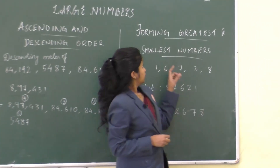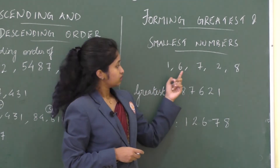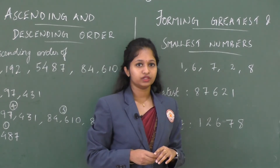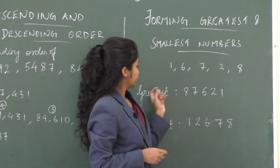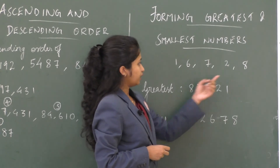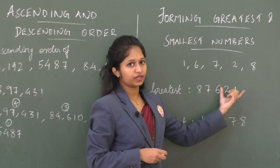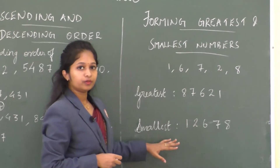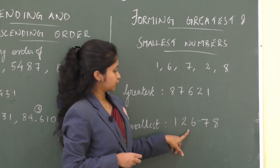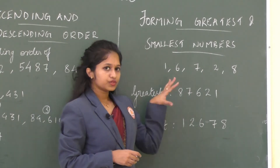Now we will learn how to form the greatest and smallest numbers using given digits. Here I have the digits: 1, 6, 7, 2, and 8. To form the greatest number, write the digits in descending order: 8, 7, 6, 2, 1 — giving 87,621. To form the smallest number, write the digits in ascending order: 1, 2, 6, 7, 8 — giving 12,678. This is how we form the greatest and smallest numbers using given digits. Thank you.